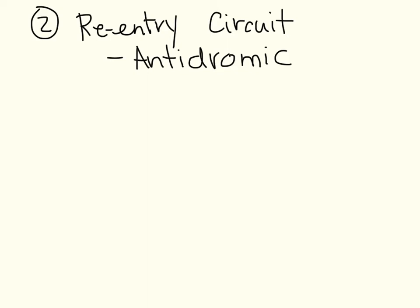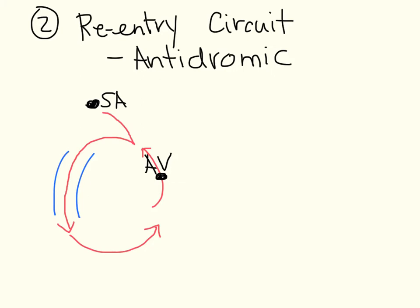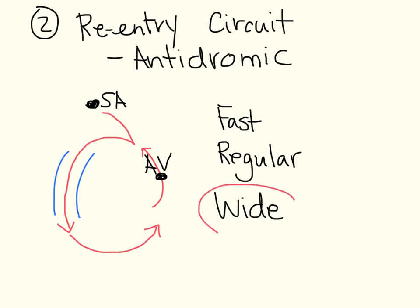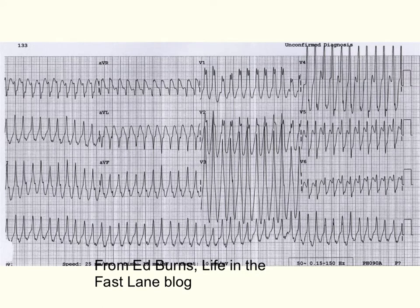The second, less common form of the re-entry circuit is antidromic conduction. This is when the accessory pathway allows conduction through it in the forward direction and then goes up through the AV node. The rate would still be fast since there is still a circuit going around. It would also be regular. Since the accessory pathway doesn't follow the regular conduction pathway, it is going to create a wide QRS complex — we saw this even when in sinus rhythm. So the ECG would be fast, regular, and wide.